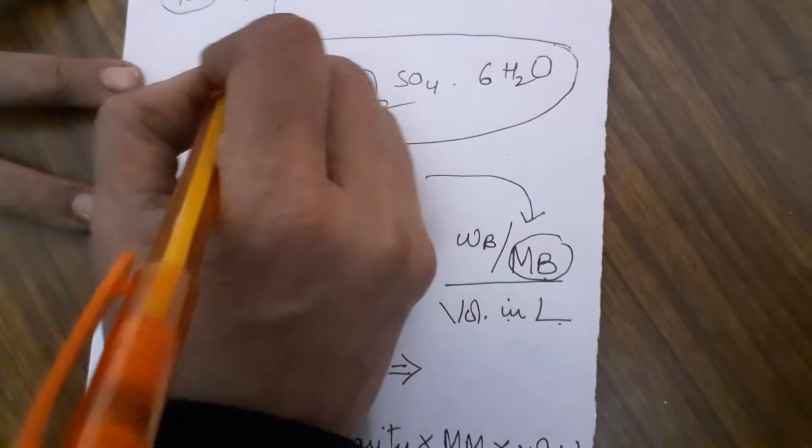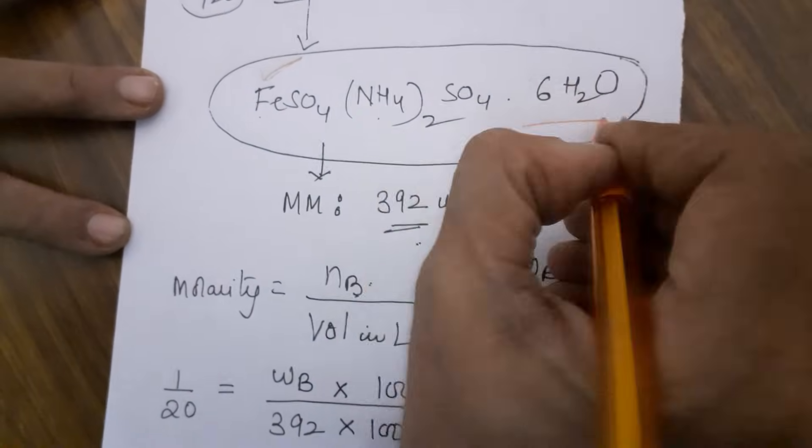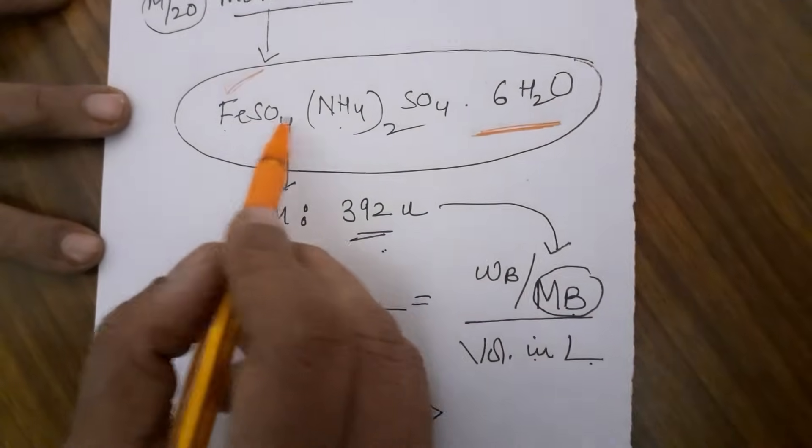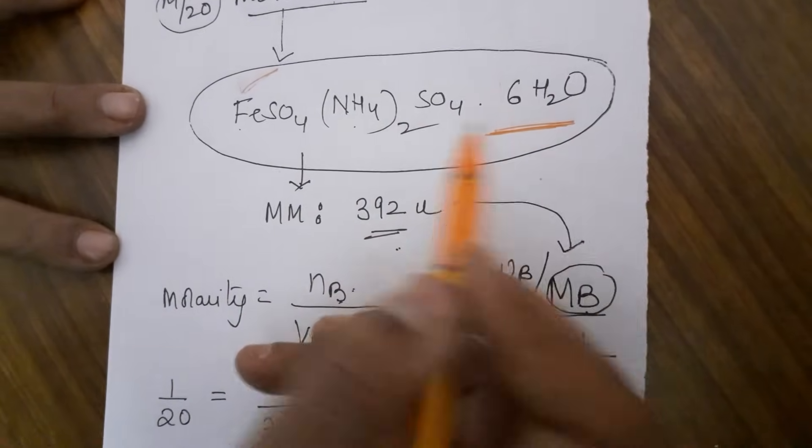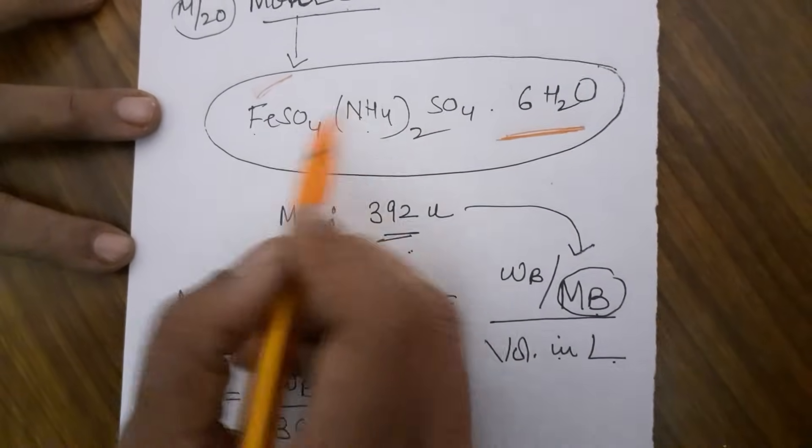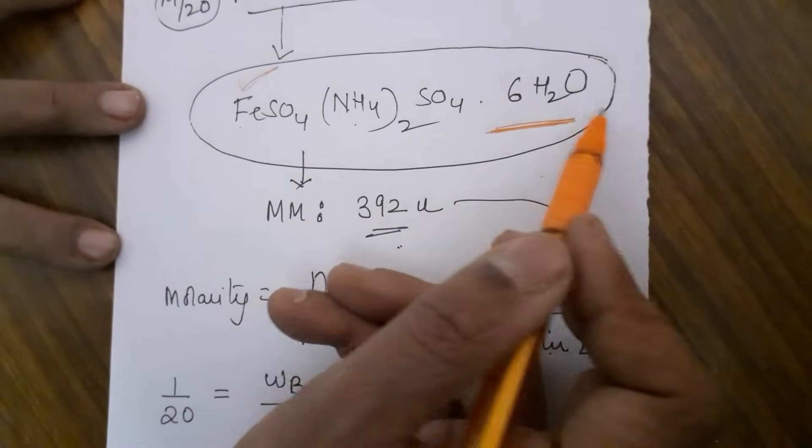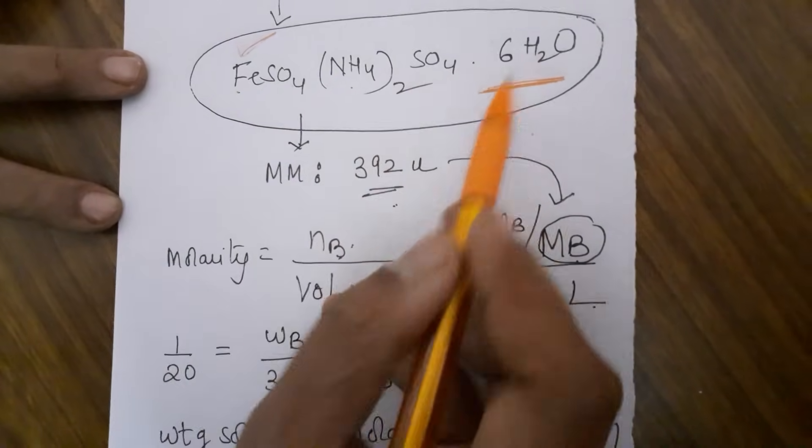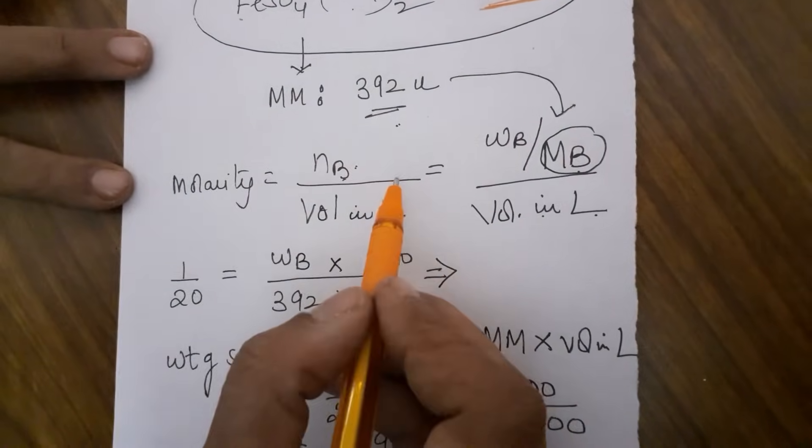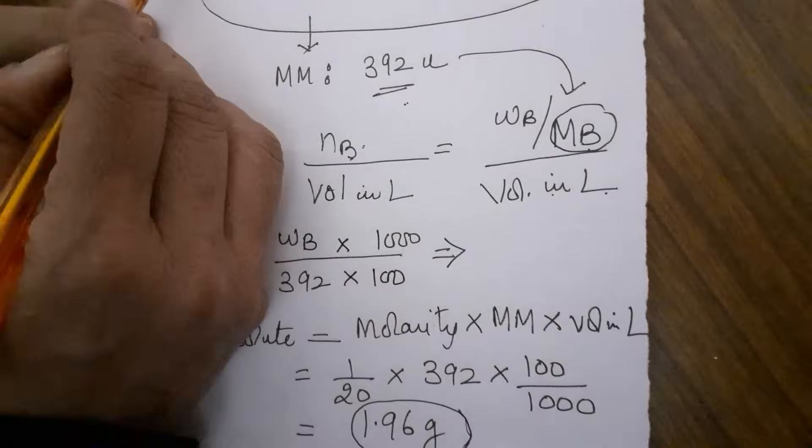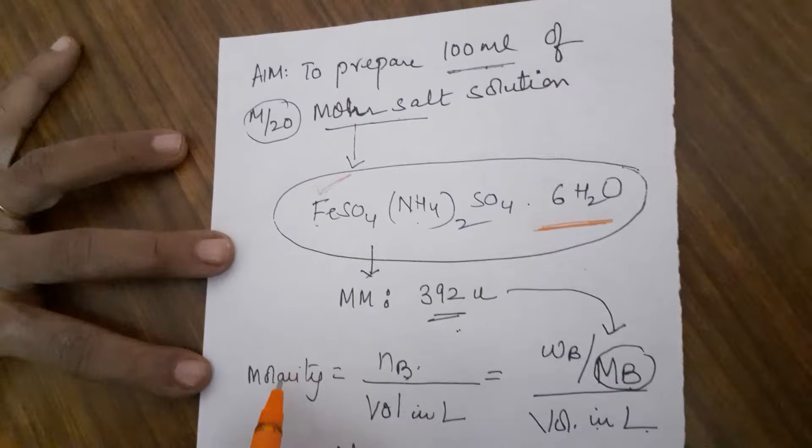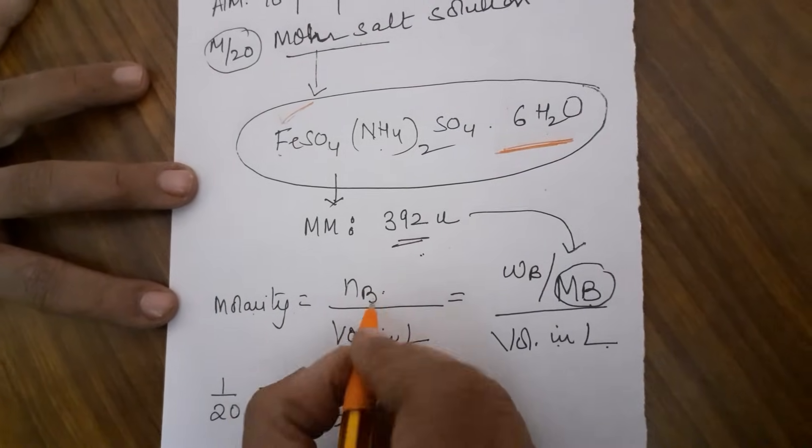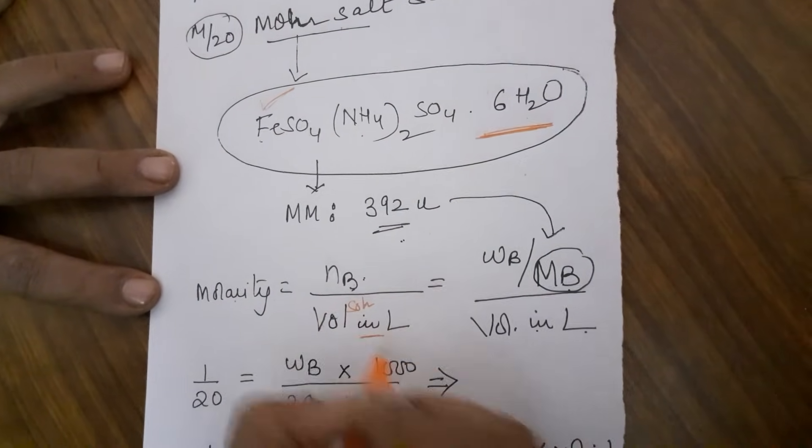Because it is ferrous it will be colored, with 6 water molecules it will be crystalline. Molecular mass if you calculate for this, its chemical name is ferrous ammonium sulfate hexahydrate. Molecular mass is 392. Now to prepare the solution you have molarity which is M by 20. Molarity equals moles of the solute divided by volume of the solution in liters.